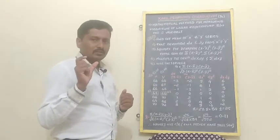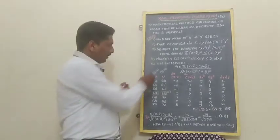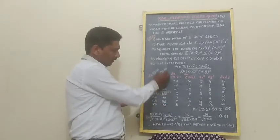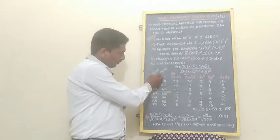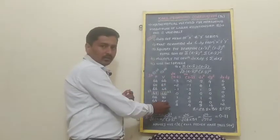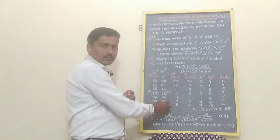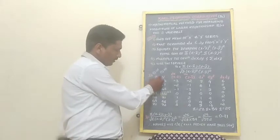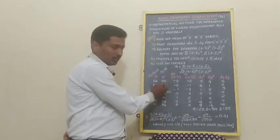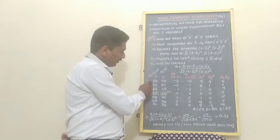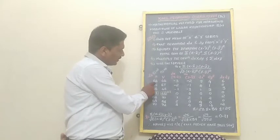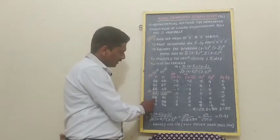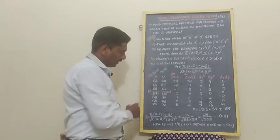For example, consider father's height and son's height. Father's height is the x-series and son's height is the y-series. The x values are 64, 65, 66, 67, 67, 68, 69, and 70.